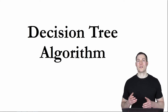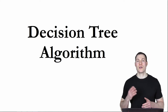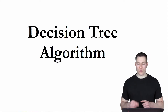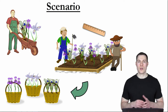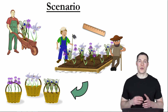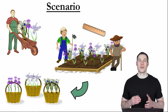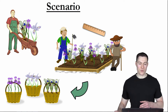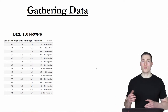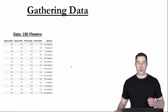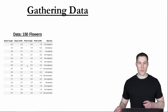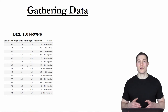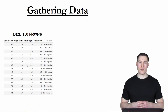To first get an intuition about how decision trees generally work, imagine again that you're the flower grower and you have to solve the same problem as in the previous video — but this time without using any machine learning at all. Just like before, you pick 50 flowers of each type yourself and gather some data. Then, instead of using machine learning, you analyze the data to see if you can find patterns that might help the flower pickers to distinguish the different types of flowers.